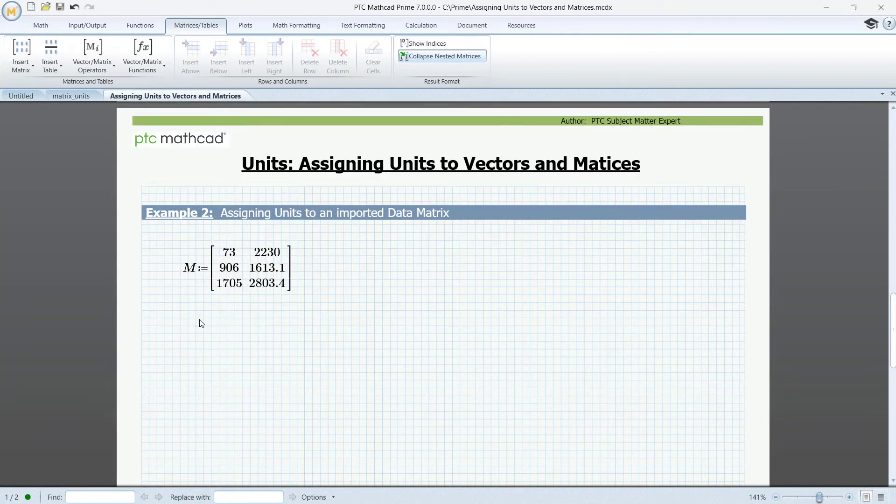In the next example, we'll see how to assign units to an imported data matrix. To simulate the situation, let's define a matrix D to be equal to M. We can't go to the elements and enter a unit. That's not possible. So instead, we could redefine the elements of D, or even better, we could redefine the columns of D.